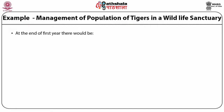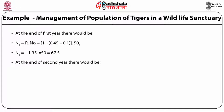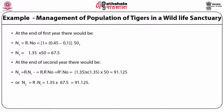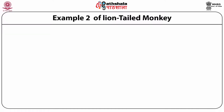At the end of the first year, the number of tigers = R · N0 = (1 + 0.45 − 0.1) × 50 = 67.5. At the end of the second year, it is R² · N0 = 1.35 × 1.35 × 50 = 91.25. Thus, at the end of time t, Nt = R^t × N0. We can also apply this exponential growth rate to the conservation of the lion-tailed macaque.